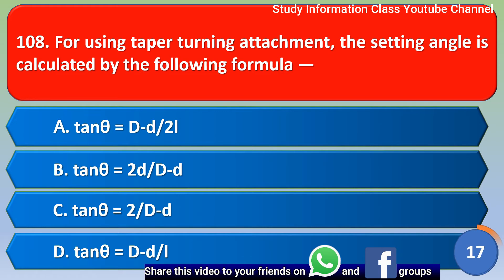Next question: for using the taper turning attachment, the setting angle is calculated by the formula — option A: tan θ = (D − d) / 2L. The correct answer is option A.